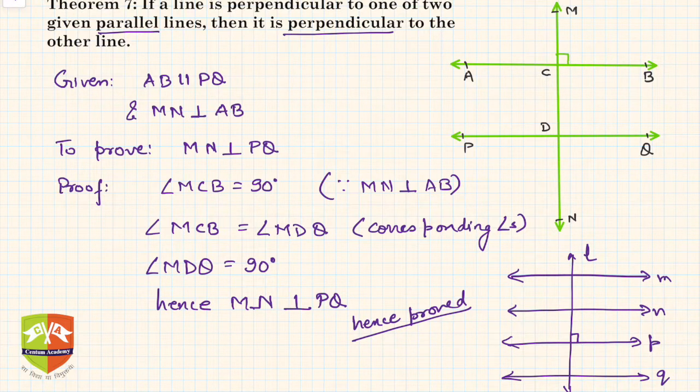And any of these angles, let's say this is 90 degrees, then all of them will be 90 degrees. You know why? Because all of them are corresponding angles.